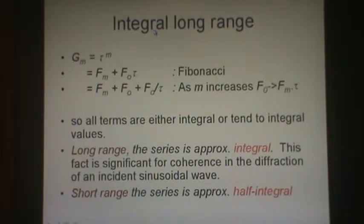So let's look again at the long range. In the long range, a geometric term G_M splits, as we just showed, into three Fibonacci terms, F_M plus F_0 plus F_0 over tau. That's making the substitution of tau equals 1 plus 1 over tau. And as M increases, F_0 tends to F_M times tau. By substitution, we get here three terms. Two are integers, and one tends to an integer. So all terms are either integral or tend to integral values. In the long range, the series is approximately integral. This factor is significant for coherence in the diffraction of an incident sinusoidal wave, as we proved by simulation.